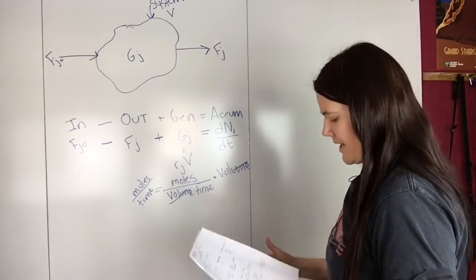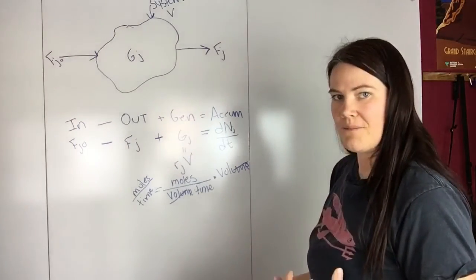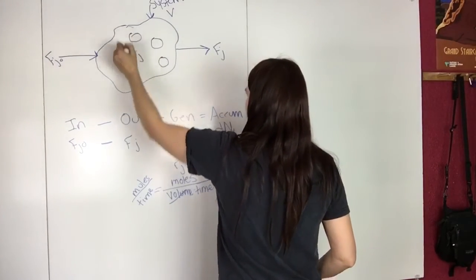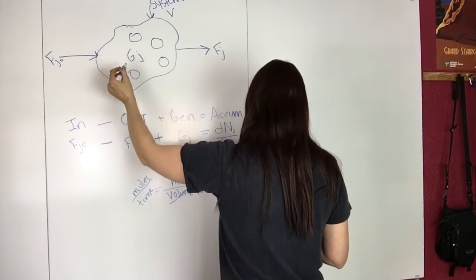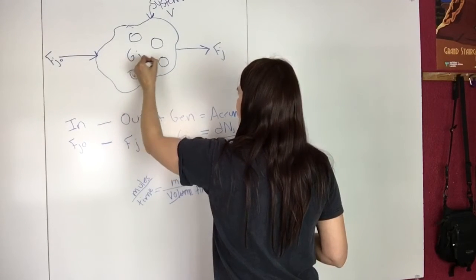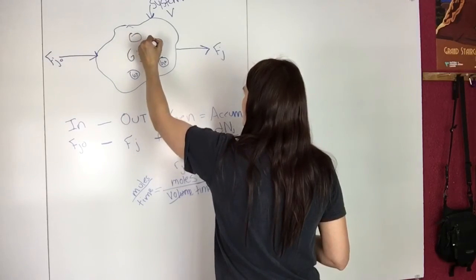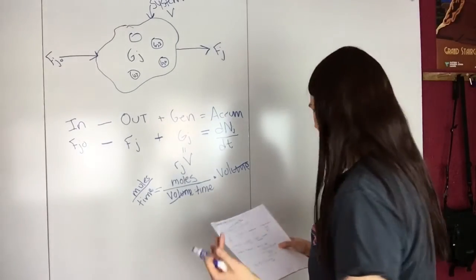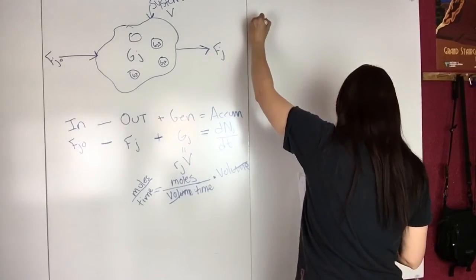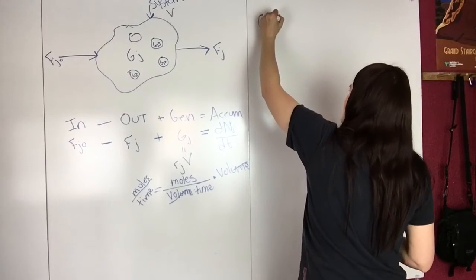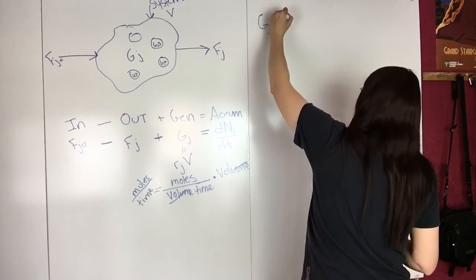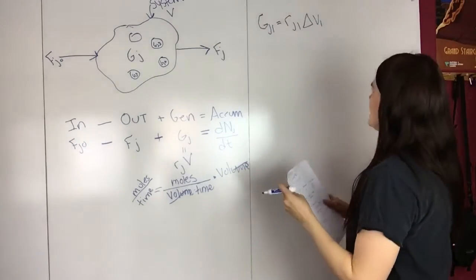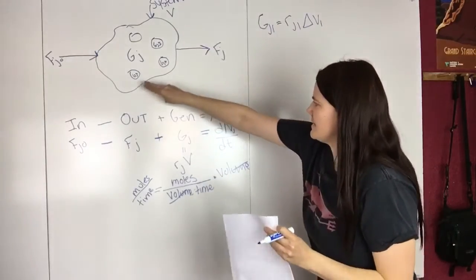And so to get an actual equation for that, first of all, you can imagine that there's a bunch of sub-volumes in here. So let's just imagine that these are all sub-volumes. So we have GJ1, GJ2, GJ3, etc. So then you can just add all those up. So first of all, you know that GJ1 is equal to RJ1 times delta V1. So this is this little mini-volume.